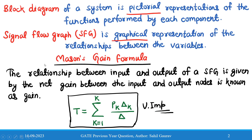From the signal flow graph we can find the transfer function or the gain using Mason's formula. The relationship between the input and output of an SFG is given by the net gain between the input and output nodes. The transfer function or gain of the system is given by the summation expression: T = (summation from k=1 to K of P_k * delta_k) divided by delta.